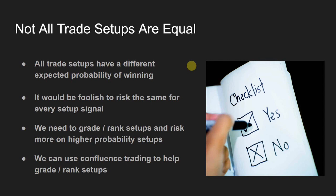If we know that, it would be foolish to risk the same amount for every single setup our trading strategy provides. We've all heard the saying 'never risk any more than 2% of your account.' When people hear that, they miss the wording of 'don't risk any more than 2%' - they take it as 'risk 2% and that's it.' No one ever talks about risking 1% or 0.5%. A trader on a podcast about a year ago was talking about this, and I didn't really implement it until around four or five months ago.